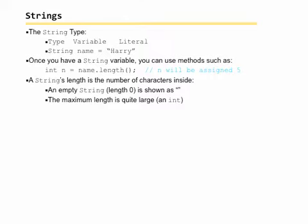So once you have a string variable, you can use string methods. There are, we'll see in just a moment, some different string methods. But the length method will return how many characters are in that string. So if name contains the string Harry, name.length is going to be 5, because there are 5 characters in Harry. And note that 5 is an integer, so we're going to store this result in the integer variable n. The string's length is the number of characters it contains. An empty string has a length of zero, and it's just shown as two quotes right next to each other.